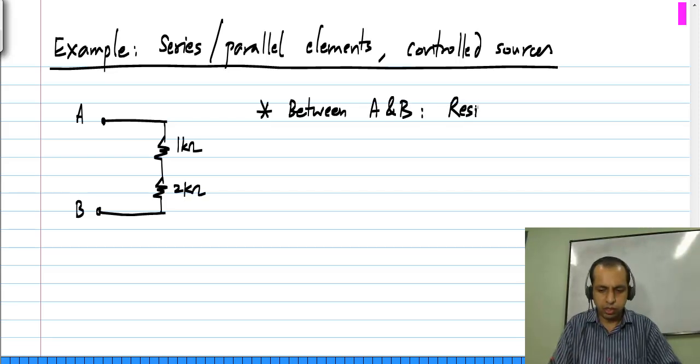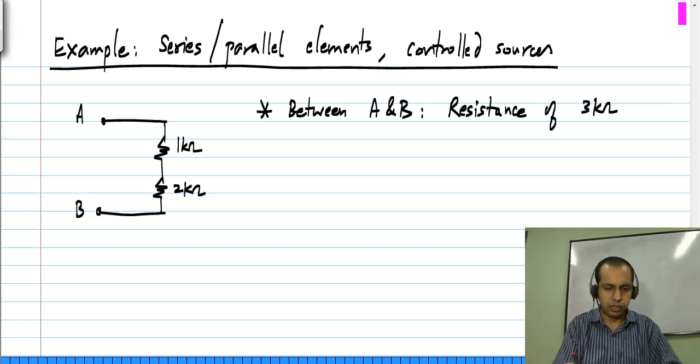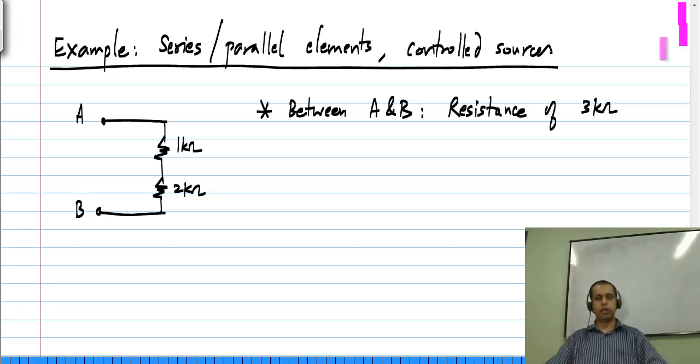It clearly looks like a resistance of 3 kilo ohms because we have already discussed that a series combination of a number of resistors simply looks like the sum of all the individual resistors.